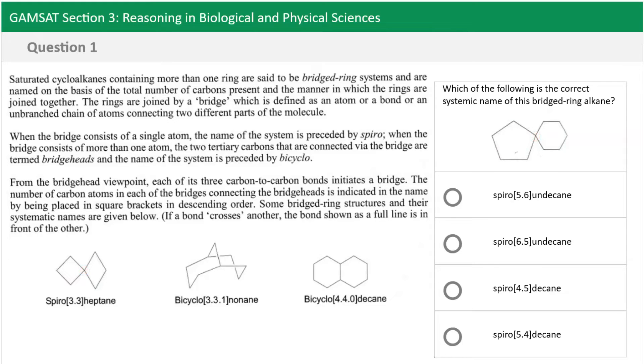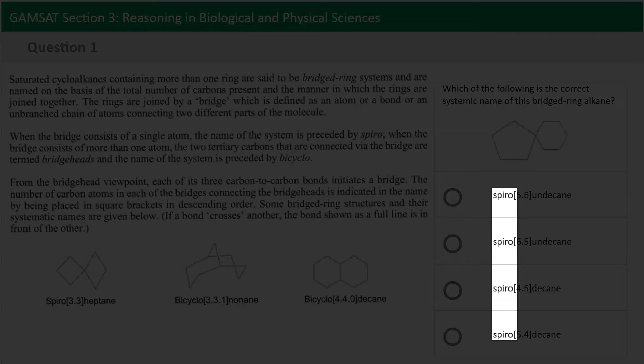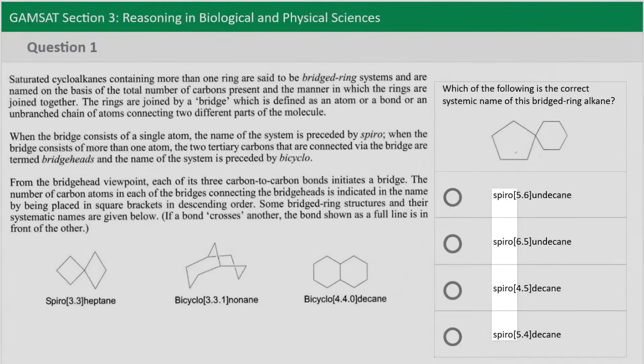Okay, now the fact that all of the options start off with spiro means that we don't need to prove that the molecule that we have is indeed named spiro. We can actually ignore that. The fact that we know that the spiro probably is referring to the fact that it's a two ring structure connected at one point, that's enough for us to move on and see what else we can have a look at.